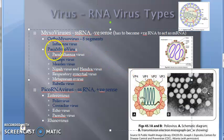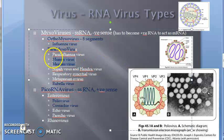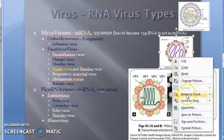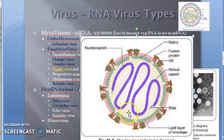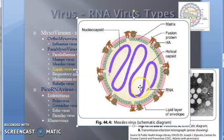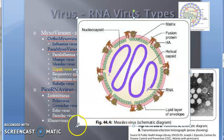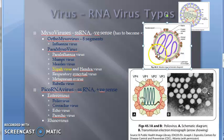Then you have paramyxovirus. Paramyxovirus includes measles virus and mumps virus. These also have single-stranded RNA. Except rotavirus, everything will be single-stranded RNA only.